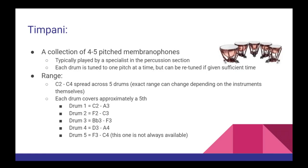First up, let's look at the timpani. The timpani is a collection of four to five pitched membranophones, typically played by a specialist in the percussion section. The total range of all the drums spans from C2 to C4, covering the two octaves just below middle C. Each drum can be tuned to one note at a time, but can be retuned to a different pitch if given sufficient time. The individual range of each drum spans approximately a fifth, with some overlap between each drum size. The lowest drum is the largest, with an approximate range of C2 to A3. The second largest drum has an approximate range of F2 to C3.